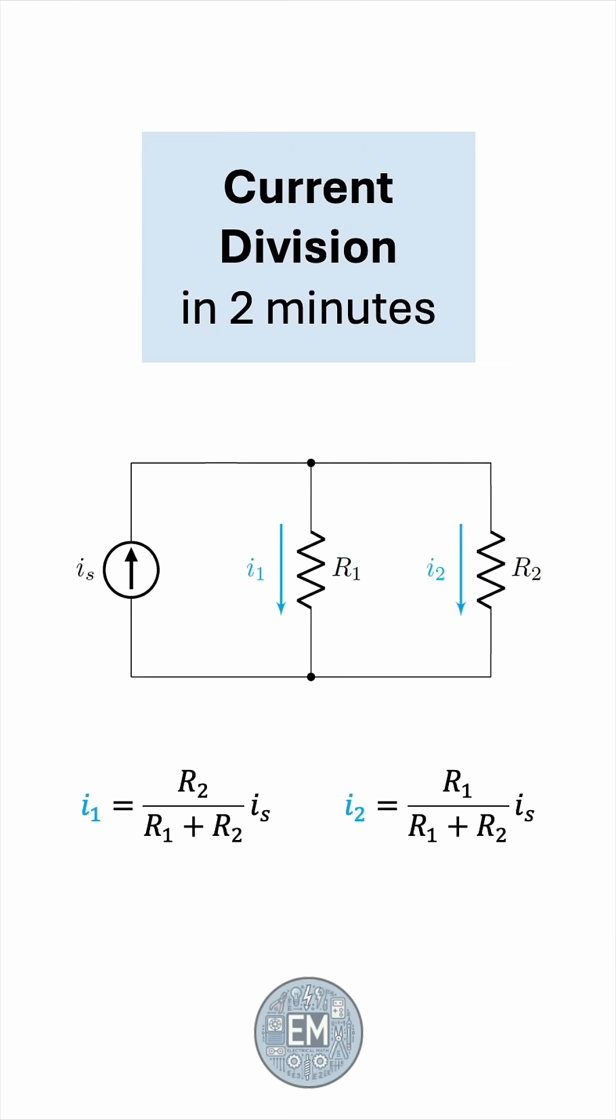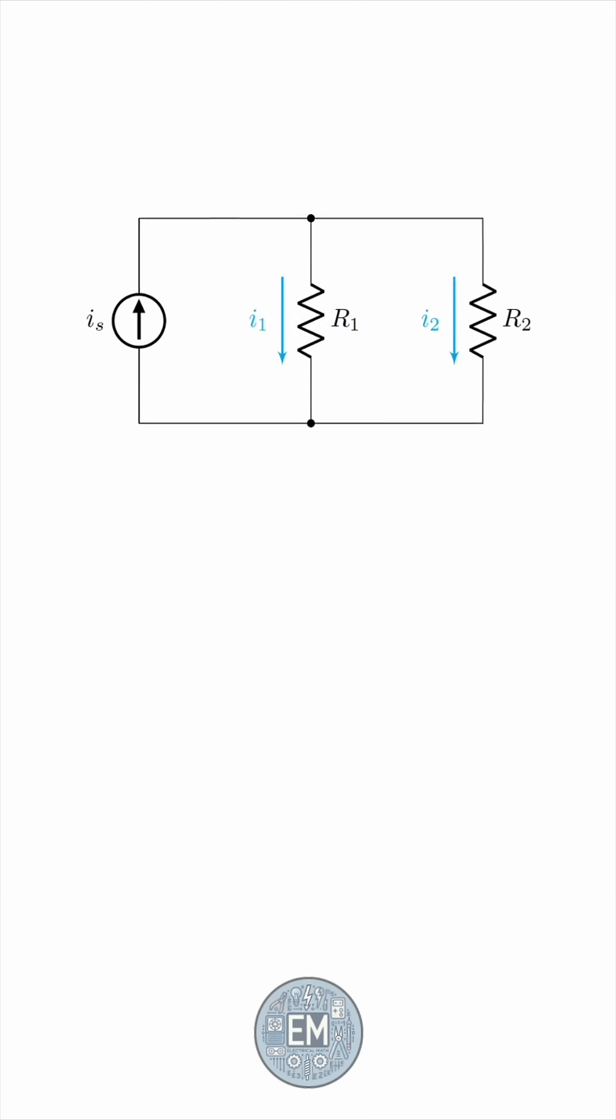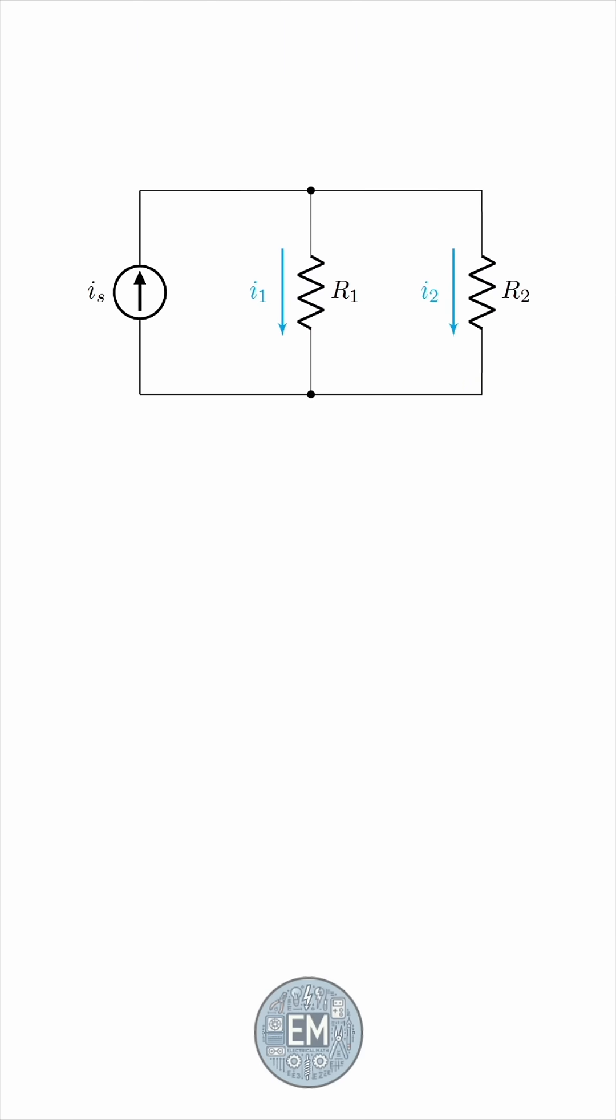Current division is a fundamental principle in circuit analysis. Let's understand it in two minutes. This is the current divider circuit, a current source feeding two resistors in parallel.